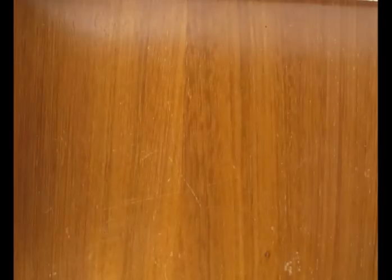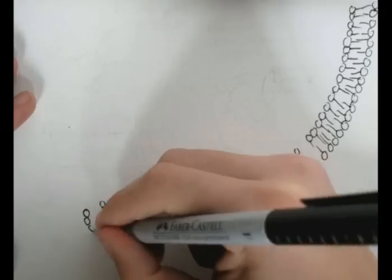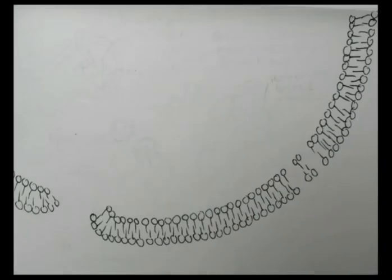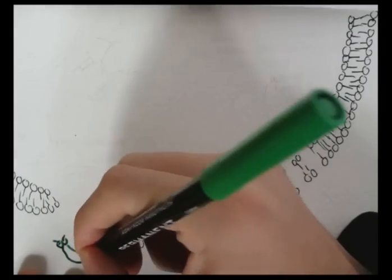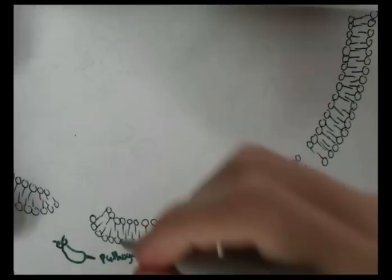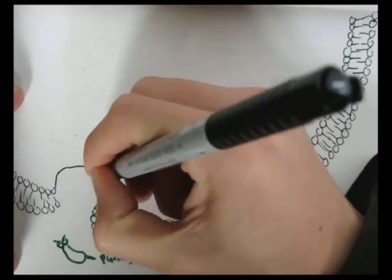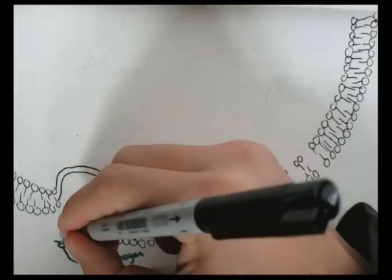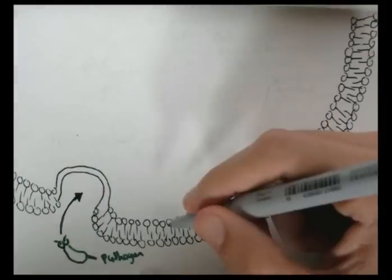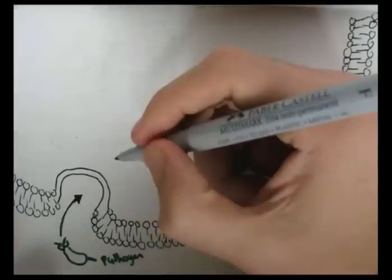So that was for MHC class 1. Let's have a look at how MHC class 2 presents itself on the cell surface and the process to which it does it. So a pathogen gets phagocytized by the cell, let's just say it's a macrophage, and through a process called endocytosis the pathogen is inside an endosome.